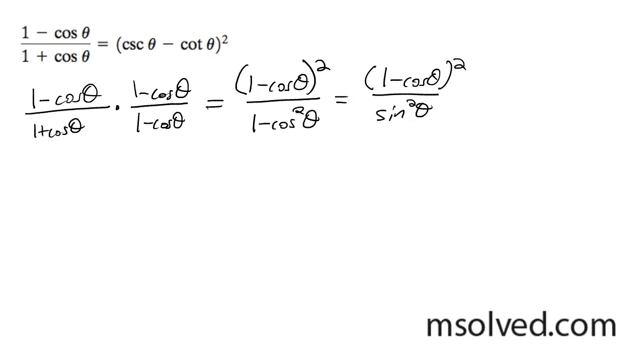Now we can break this up. I can do quantity 1 over sine theta minus cosine theta over sine theta, quantity squared.